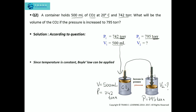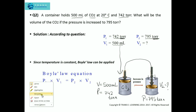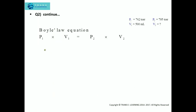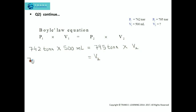Since the temperature is constant as given in the question, we can apply Boyle's law equation P1V1 = P2V2. Pressure one is 742 torr, volume one is 500 ml, pressure two is 795 torr, and volume two we need to find. So volume two equals 742 torr × 500 ml divided by 795 torr.